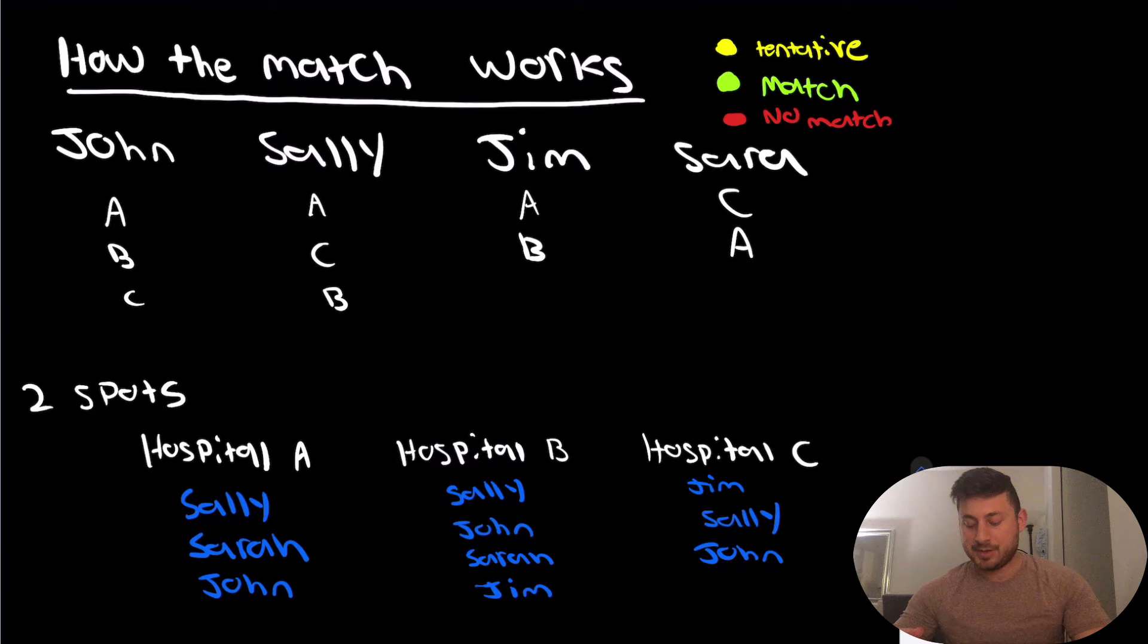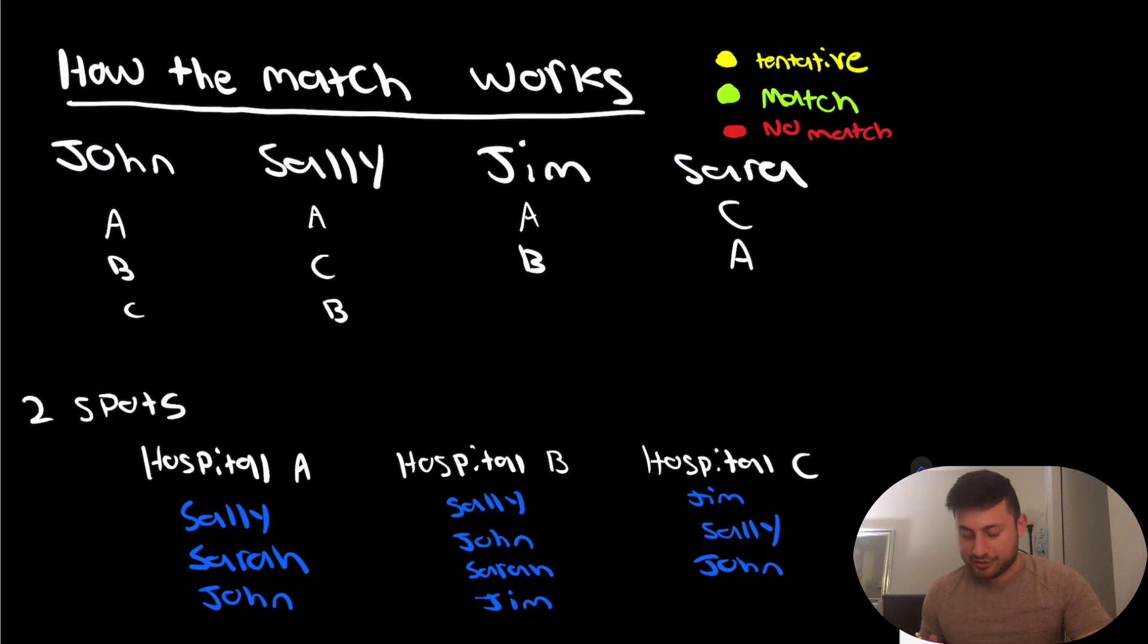So we'll start with John. John lists Hospital A as the place that he wants to go the most. That's his first program on his rank list. So we're going to go and see if John could potentially match at Hospital A. Hospital A did put John in their rank list, although he's number three. So it's possible that he might match there. So we're going to circle John in yellow, saying he tentatively matches there for now. And then we're going to move on to Sally.